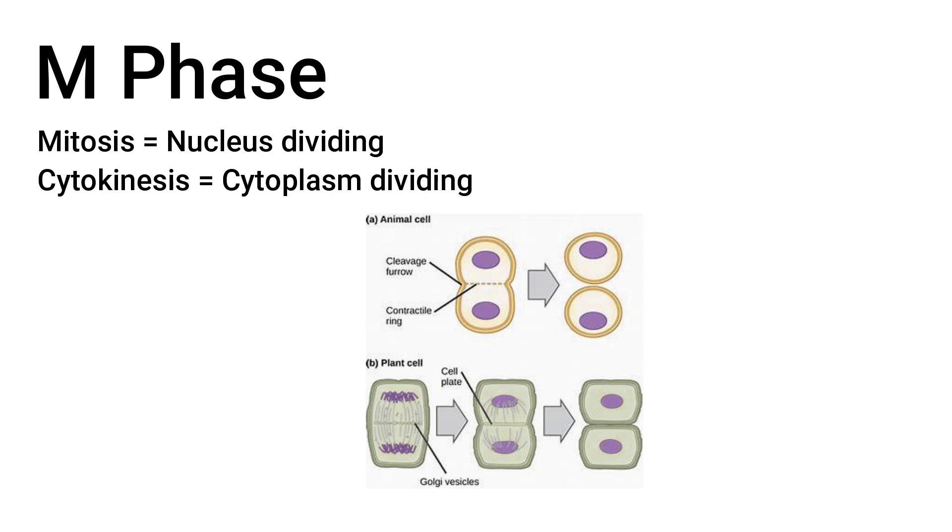If the cell is a plant cell, then instead of the cytoplasm pinching in the middle and splitting apart, a cell plate will grow in the middle of the cell and form a cell wall that will split the cell into two. However, before it gets ready to split, the cell will go through one last checkpoint, called the spindle checkpoint, that will make sure the chromosomes will split properly into two cells.